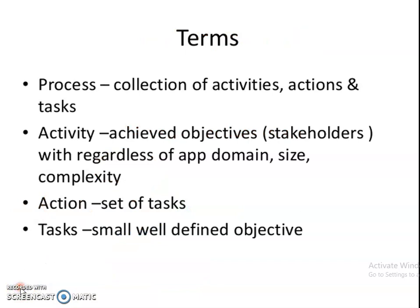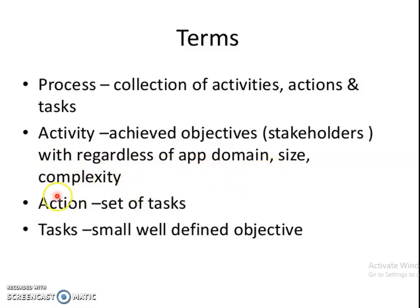Generic Process Model — what is a process? First, process is nothing but the collection of activities, actions, and tasks. Second is activity. Activity means you have to achieve objectives done with application domain, size, complexity, etc. Third is action. Action is nothing but the task. And last one is task. Task is a small, well-defined objective.